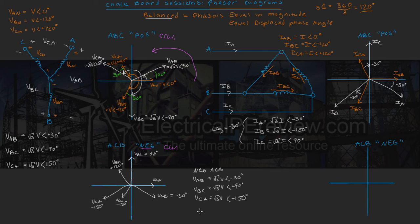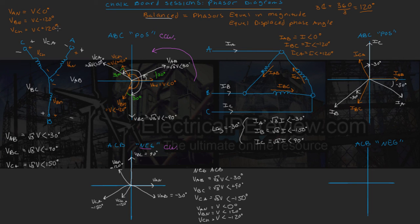Let's write out our phasor voltages for the negative sequence. VAN is left unchanged as magnitude V at phase angle zero since it is still the reference. All magnitudes remain unchanged. However, this time VBN is going to be plus 120 and VCN is going to be minus 120. Comparing to the positive sequence — where VBN was minus 120 and VCN was plus 120 — in the negative sequence these two have simply switched places: VBN is plus 120 and VCN is minus 120.